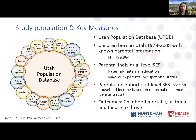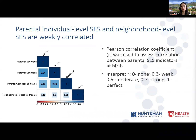We observed weak correlation between parental individual and neighborhood-level SES, with Pearson coefficient ranges from 0.17 to 0.23. The low correlation suggests that these SES measurements may capture different populations with varying demographic profiles. Within individual-level SES, parental education and occupational status were moderately correlated, with Pearson coefficient ranges from 0.45 to 0.52.